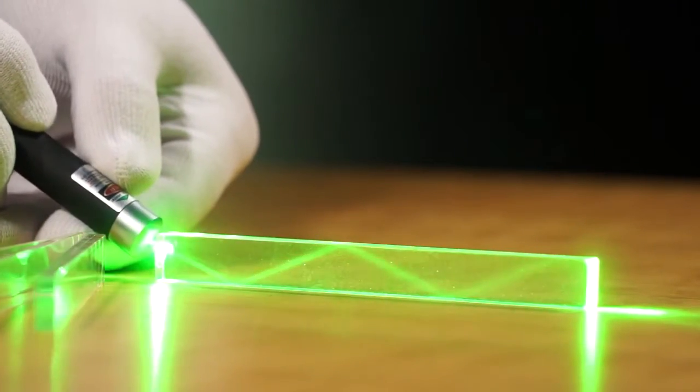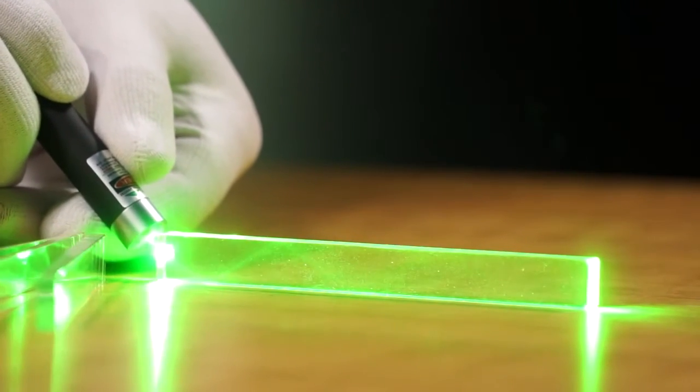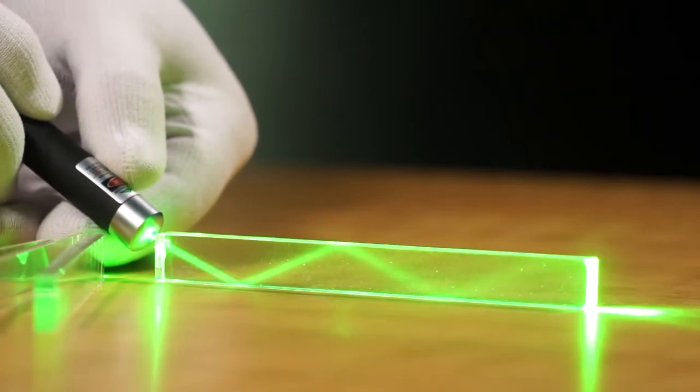In low ambient light, you can see the light internally reflected by shining a laser pointer in the polished end and varying the angle.